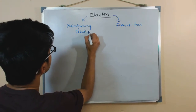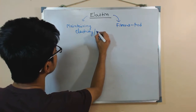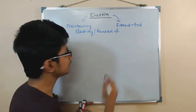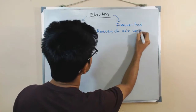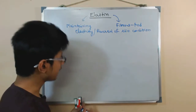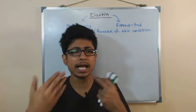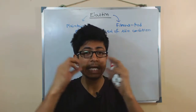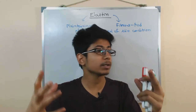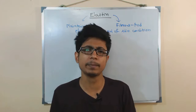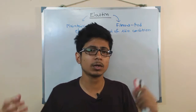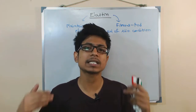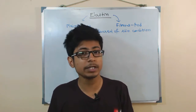Elastin helps in the reversal of skin condition. For example, when I'm speaking I'm moving my jaw up and down all the time — muscles and skin are being pulled constantly. When we watch something, we close and open our eyes. It happens during all these different activities of our body, and through all these processes elastin does its task to revert the skin back to its original form.